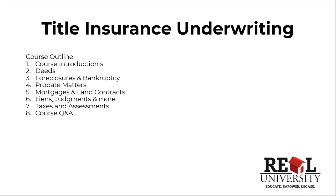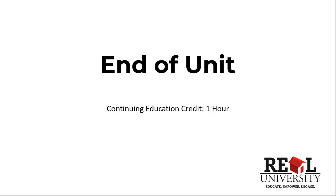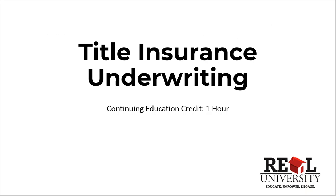We're going to talk a little bit about deeds and what the underwriter would look for. We're going to talk about foreclosures and bankruptcies, probate matters, dealing with estates and heirs. Then some of the more basic stuff — mortgages and land contracts. We'll talk about how liens pop up and what we need to do in the underwriting process, including judgments and some other issues. We'll talk a little bit about taxes, mainly real estate taxes and special assessments. And then at the end, if there's any questions, we will address them as we go. Welcome to Real University — this is the title insurance underwriting one-hour continuing ed.